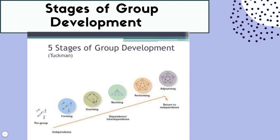There's a visual that shows the different stages and how group members move from independence to interdependence, and then return back to independence. Pre-group is before the group even forms — members are not working dependently at all because they are not even in the group yet, so pre-group is 100% independence.